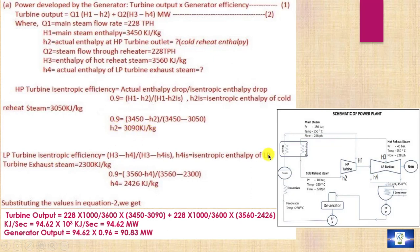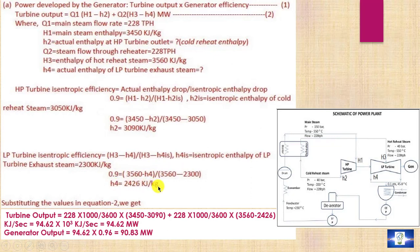In the same way, for the LP turbine, the isentropic efficiency equals (H3 − H4) / (H3 − H4s), where H4s = 2300 kJ/kg. From this calculation, H4 = 2426 kJ/kg.